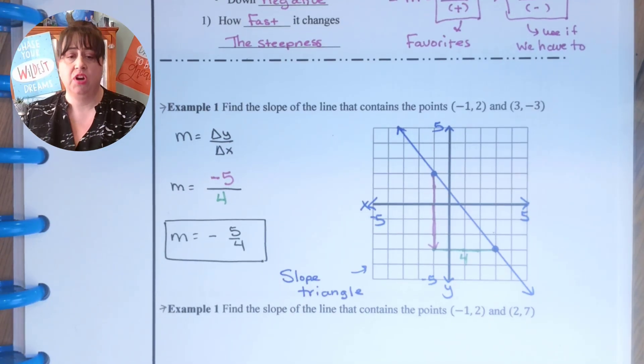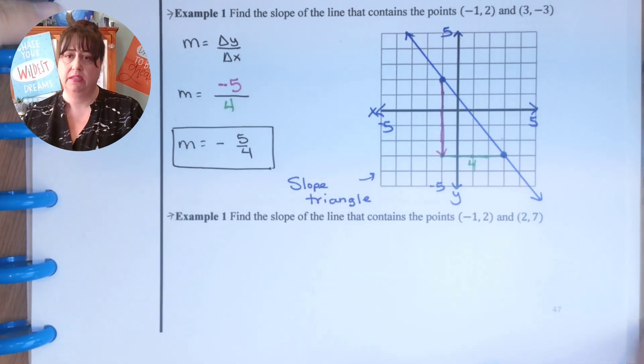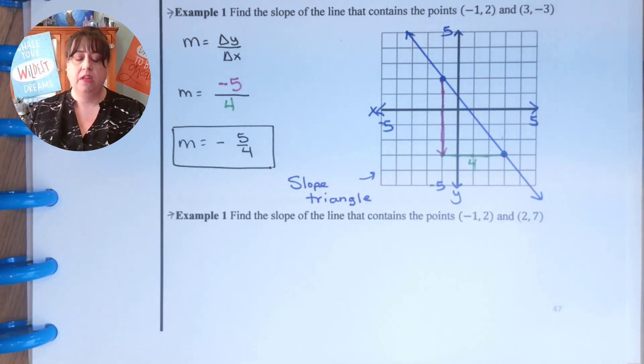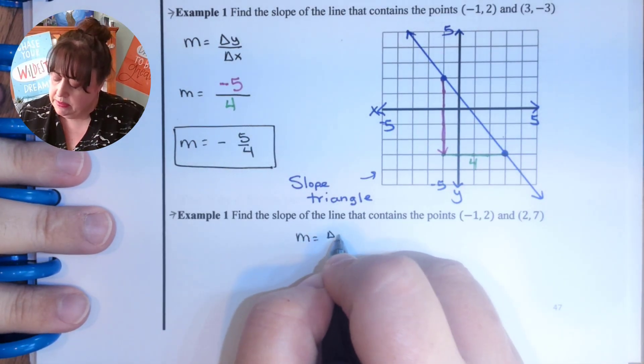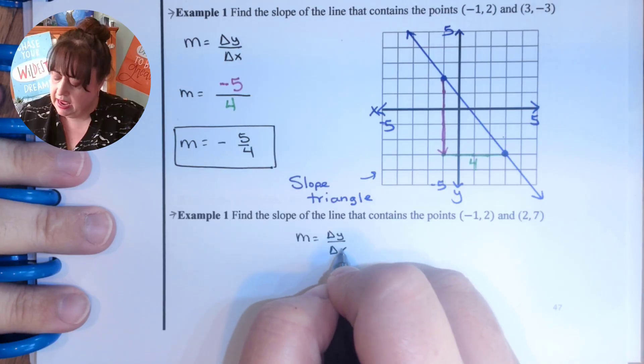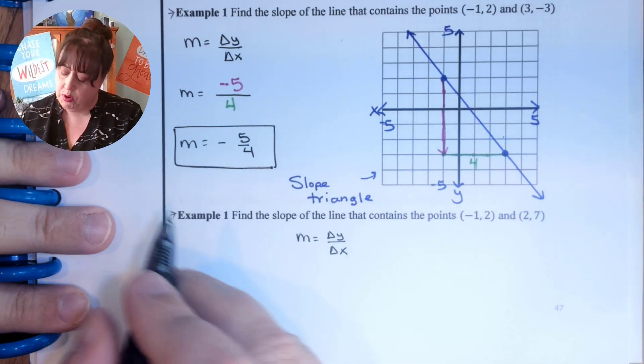So what if you don't have a slope triangle and you're just given the two points, negative one half and two sevenths? Well, then you have to use some kind of work. And so we are going to start off with what is slope. We know it's delta y over delta x. And so you need to know about your points.